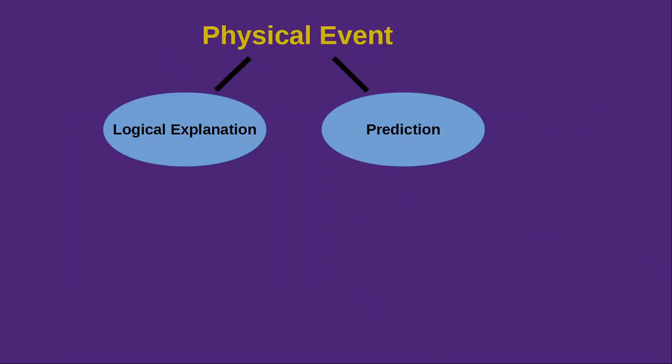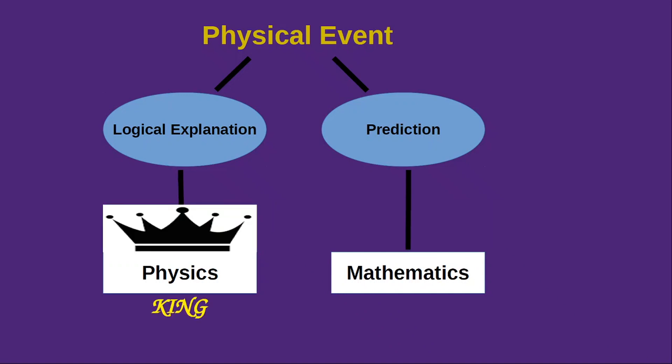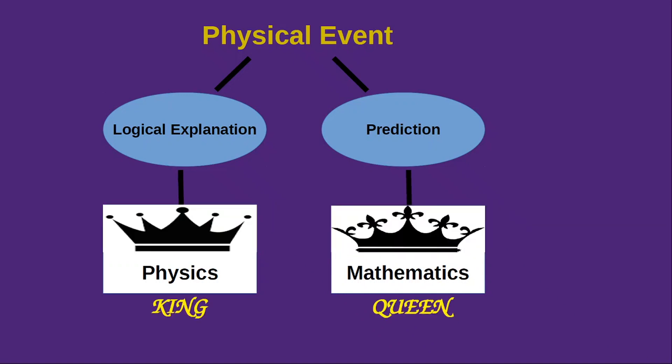So for any physical event, a logical explanation can be given with physics and its future predictions can be done with the help of some mathematical methods. This is why physics is often called the king of science and mathematics is queen.